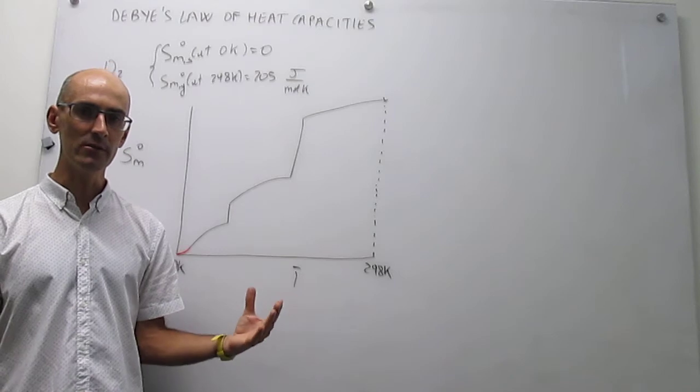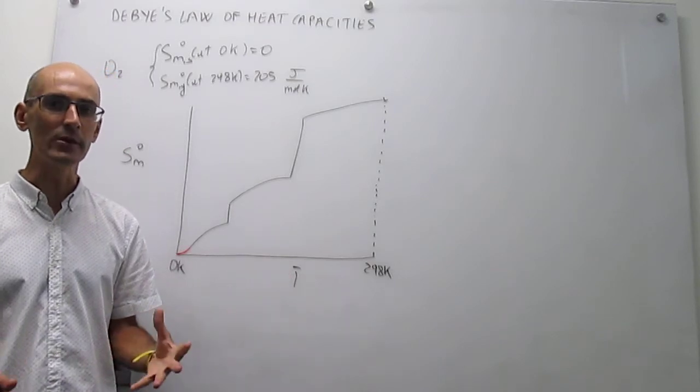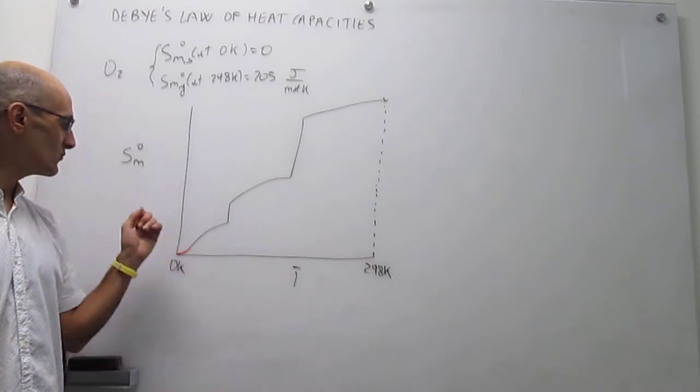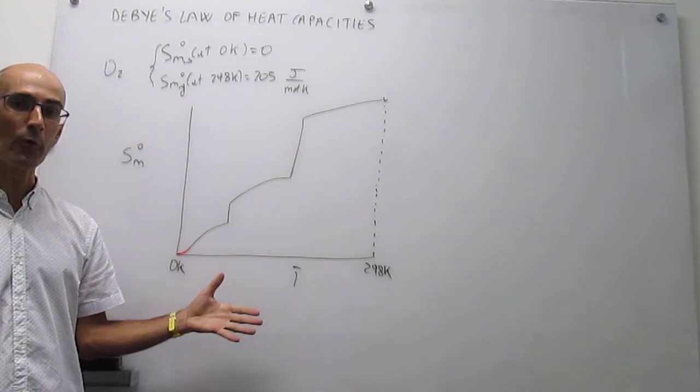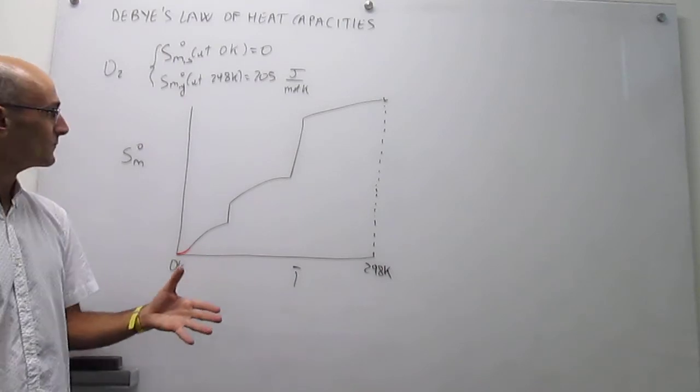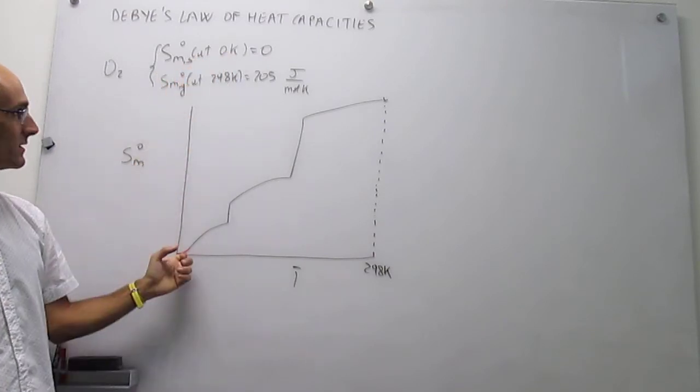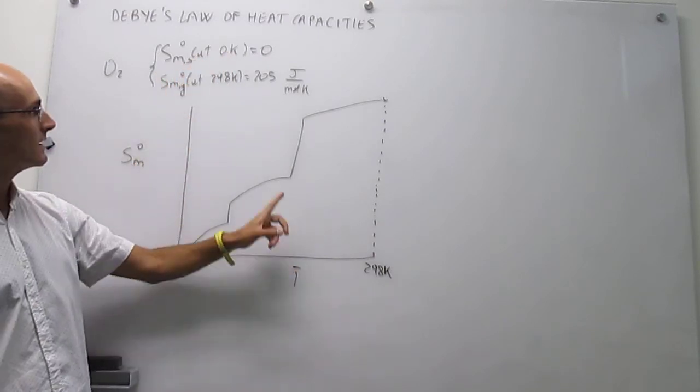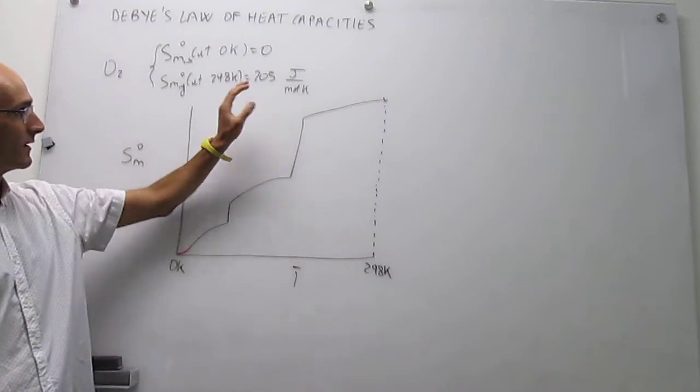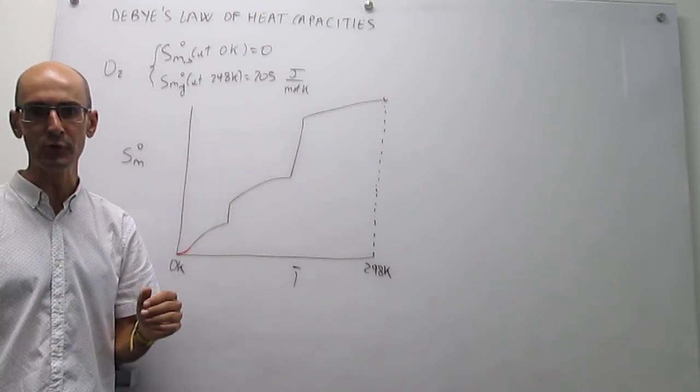So what I have right here is just simply a summary of the entropy versus temperature diagram for molecular oxygen taken from the solid state at zero Kelvin where the entropy is zero to the gas state at 298 Kelvin where the entropy happens to be 205 joules per mole Kelvin.